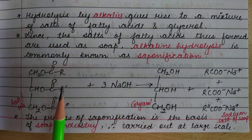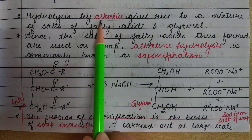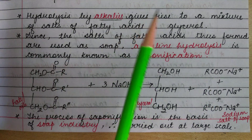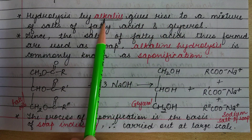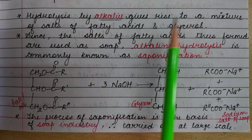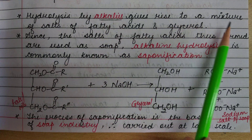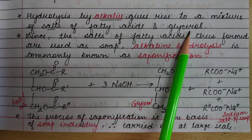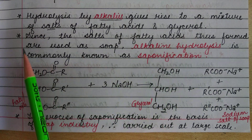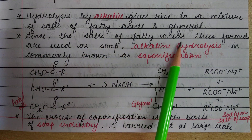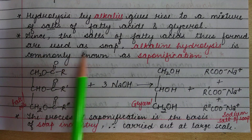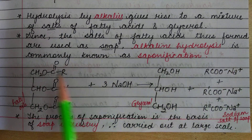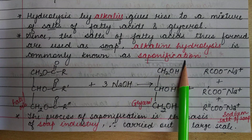But hydrolysis by alkalis — as opposed to steam or mineral acids — gives rise to a mixture of salts of fatty acids and glycerol. Since the salts of fatty acids thus formed are used as soap, alkaline hydrolysis is commonly known as saponification.